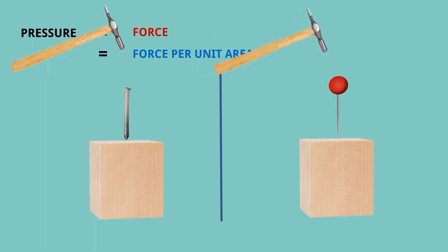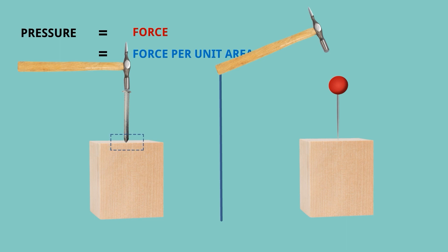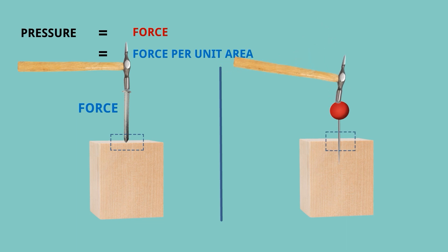These are two different wooden blocks. Here is a flat pin and this is a very sharp pin, and we will strike on the head of both. In the first case, the flat pin is not entering the wooden block because its area is not small. But the sharp pin enters the wooden block because we are applying the same force over a uniform and unit area — this is force per unit area, and it is called pressure.